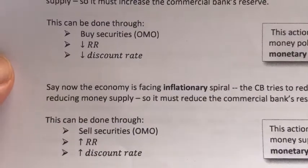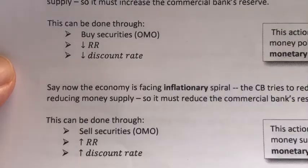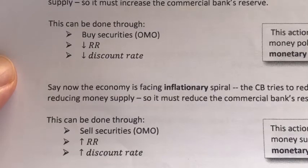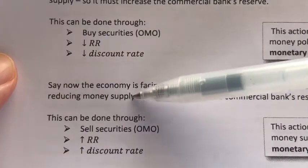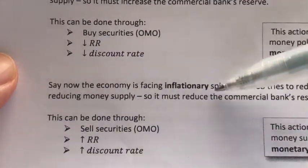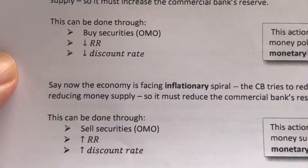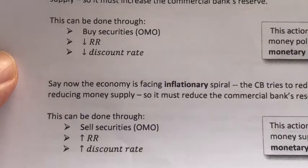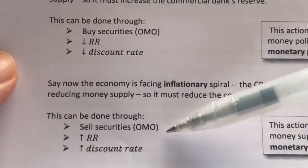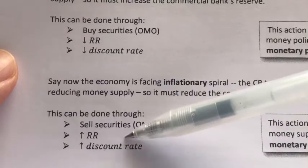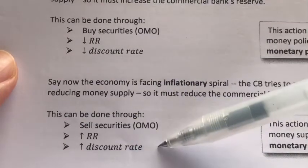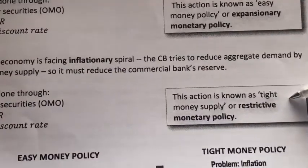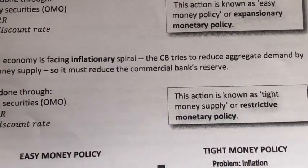Alternatively, if the economy is facing inflation, what the central bank needs to do is reduce aggregate demand by reducing money supply. The central bank can do so by selling securities or government bonds in the open market, or by increasing the reserve ratio, or by increasing the discount rate. All three of these tools are known as the tight money policy or the restrictive monetary policy.